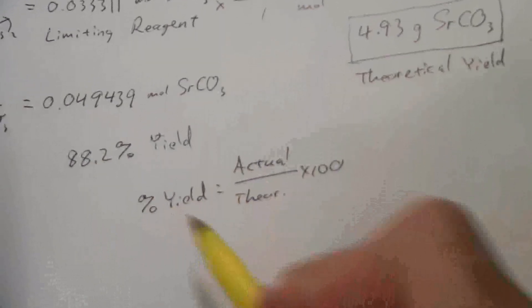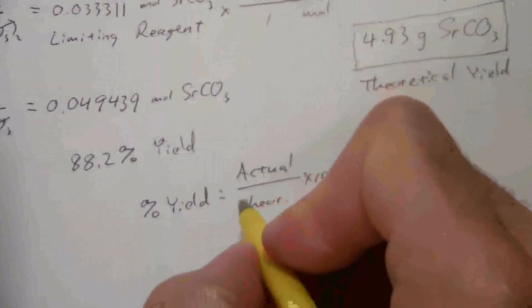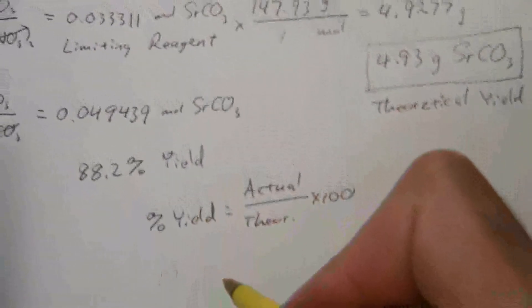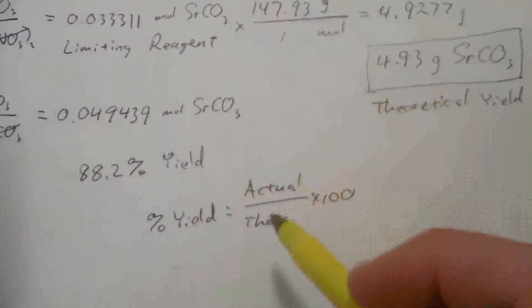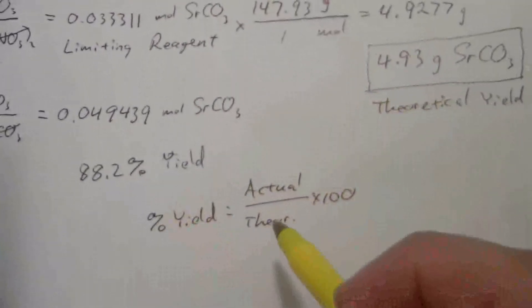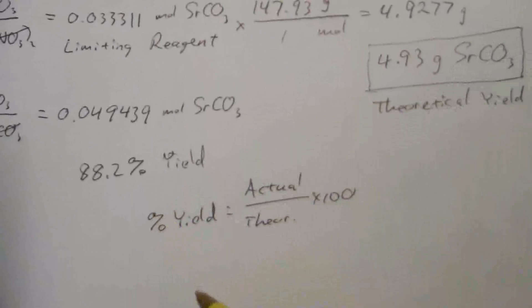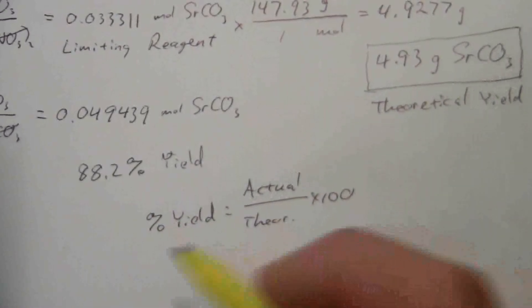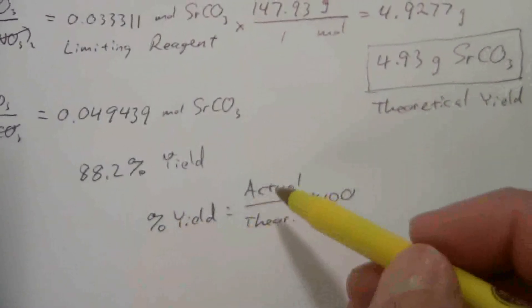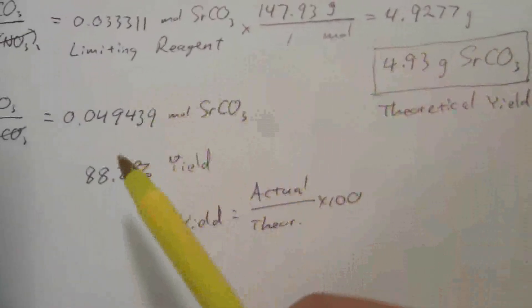So let's just do a little, I mean, you can do it either way. You can solve this equation by multiplying by the theoretical yield, and you have theoretical times the percent yield equals the actual. But that makes logical sense,